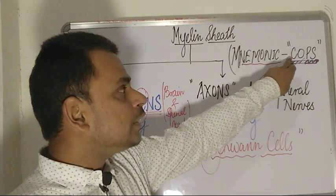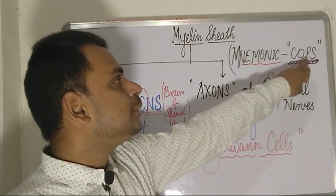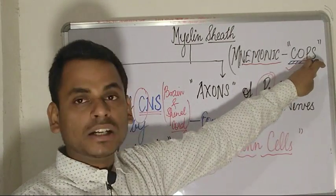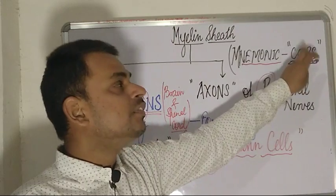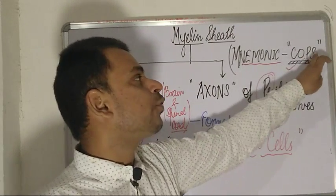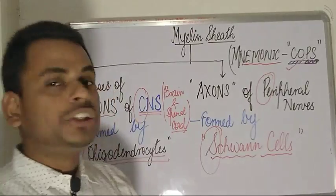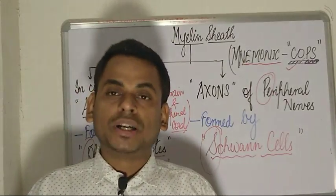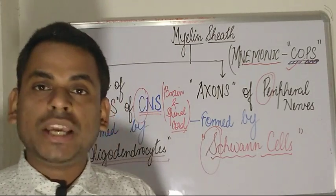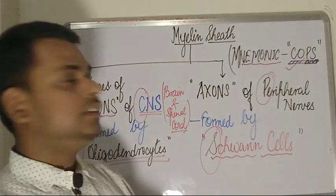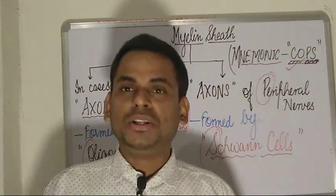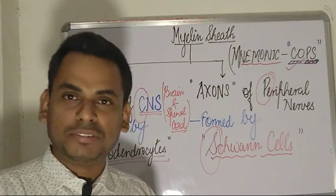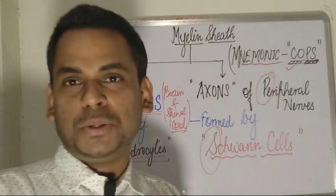To summarize using the mnemonic COPS: in the central nervous system, the myelin sheath is derived from oligodendrocyte cells; in the peripheral nerves, the myelin sheath is derived from Schwann cells. This was a short discussion on a very frequently asked and important MCQ topic in NEET and PG entrance exams. If you liked the video, please subscribe to the channel and press the bell icon to be updated about newer videos. Thank you for watching.